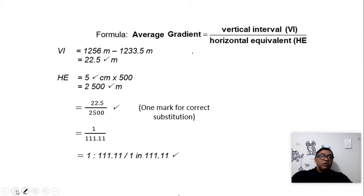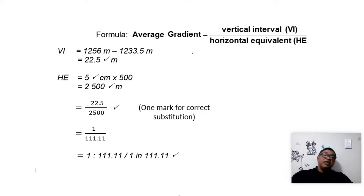Now I need to work out the overall average gradient. I worked out the VI, which is 22.5 meters. I'd get a mark for that. I then worked out my HE, 2500 meters. Remember, all steps count. I take these two figures and put them according to the order of the formula. Vertical distance over the horizontal equivalent, which is 2500. Even if this is wrong, if you substitute correctly, you will get the mark.